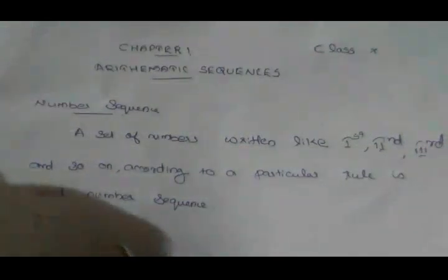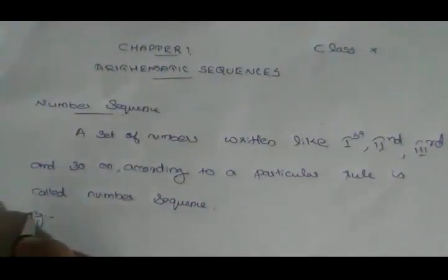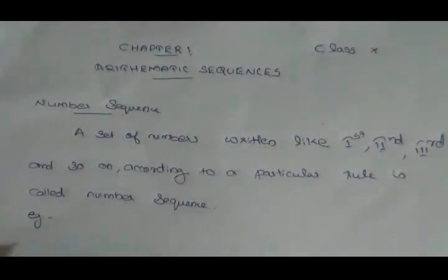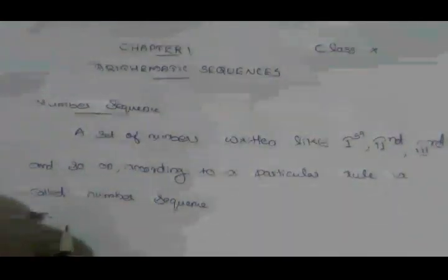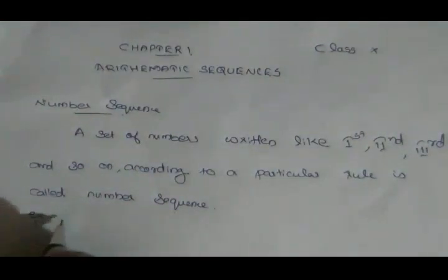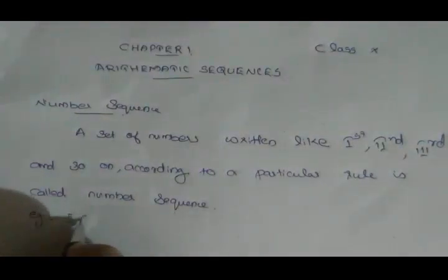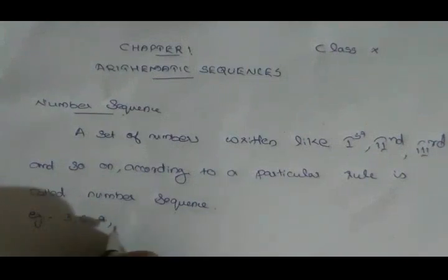For example, multiples of 3 form a number sequence. The multiples of 3 are: 1 into 3 is 3, 2 into 3 is 6, 3 into 3 is 9, 4 into 3 is 12, and so on.